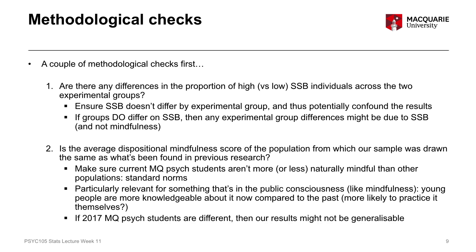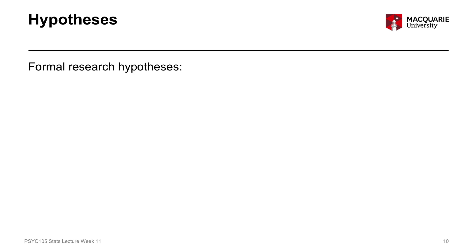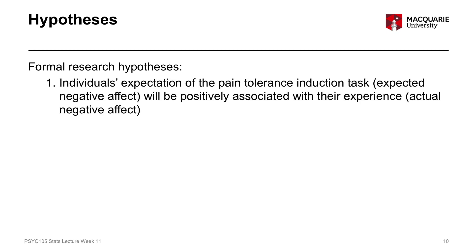We have those two methodological checks, and then we have our more formal research hypotheses — we'll address the methodological checks first and then investigate the research hypotheses. We have four research hypotheses. The first is that there will be a relationship between people's expectation of pain and their experience of pain. Specifically, individuals' expectation of the pain tolerance induction task, measured by their expected negative affect, will be positively associated with their actual experience of the task, measured by experienced negative affect.